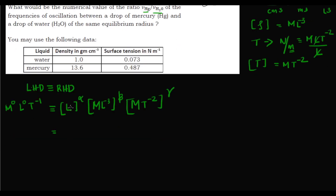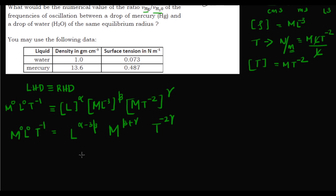Expanding the right-hand side: L gives L^(α − 3β), M gives M^(β + γ), and T gives T^(−2γ). Setting this equal to M⁰L⁰T⁻¹, we equate coefficients for each dimension separately.